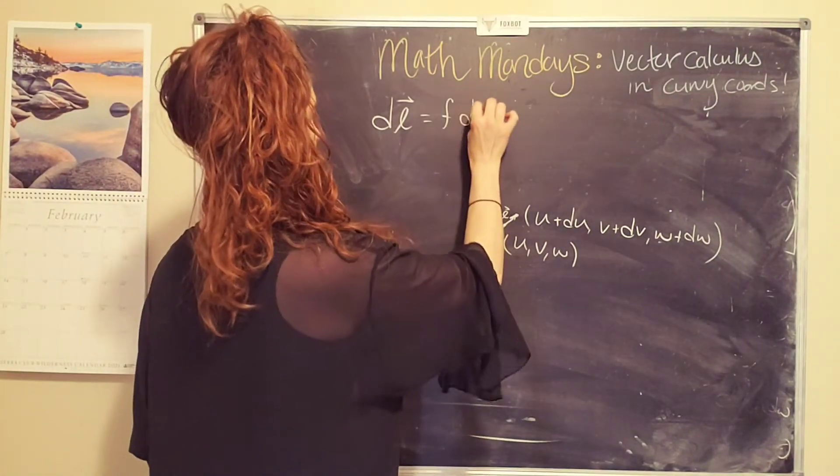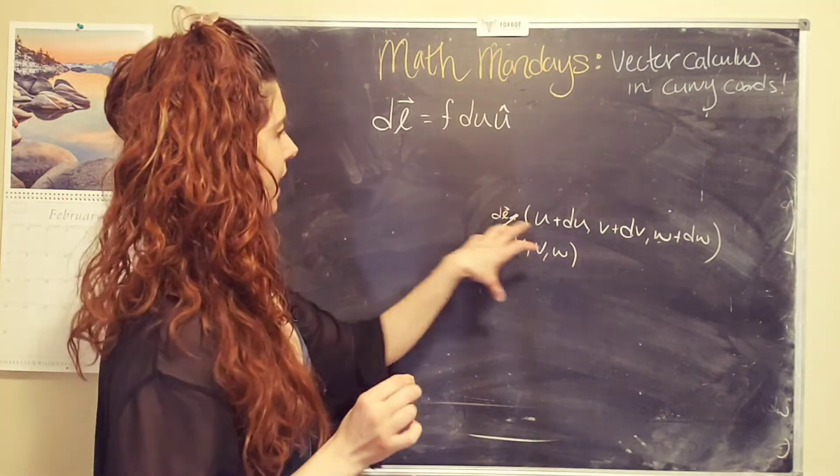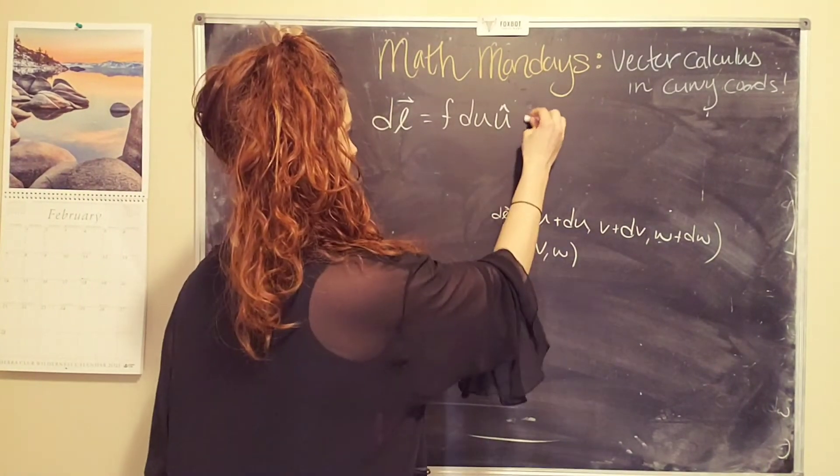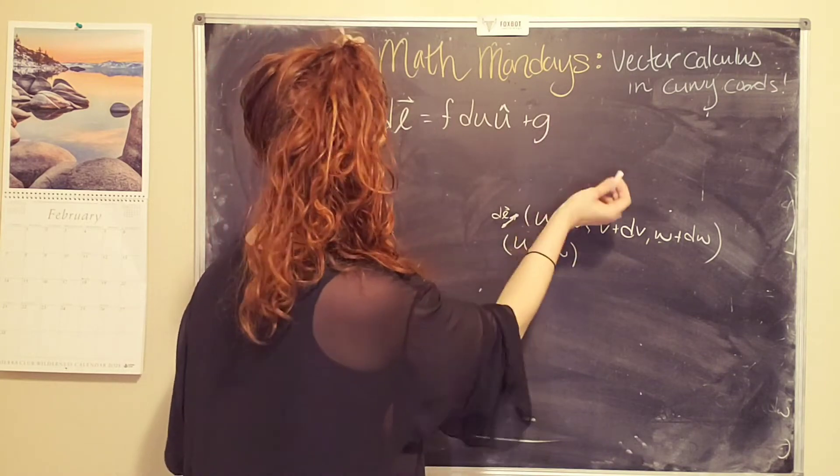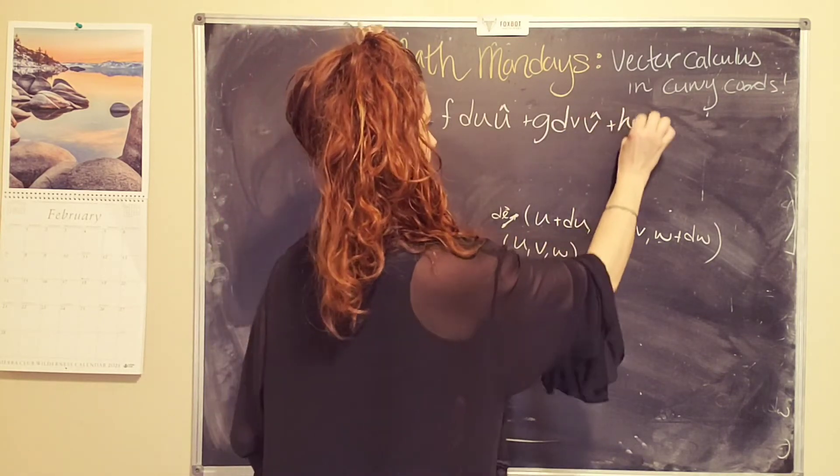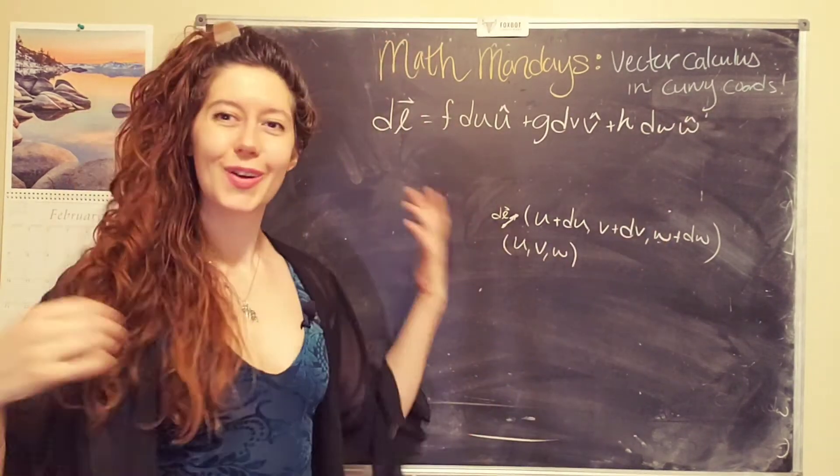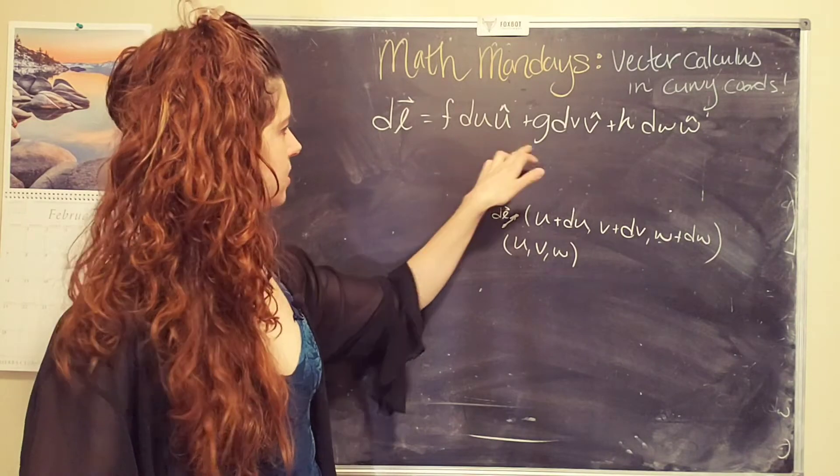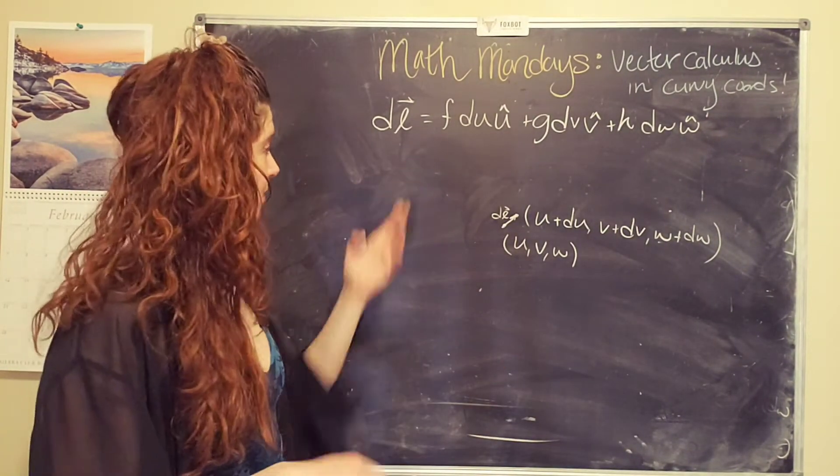And really, I just add up all of these changes. So plus g, another placeholder, dv, v hat, plus h, dw, w hat. Well, what's f, g, and h? They're placeholders in my generic system.